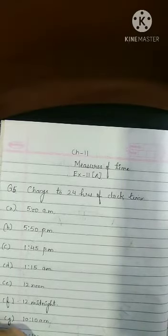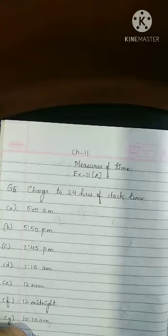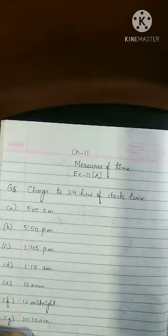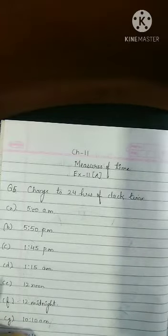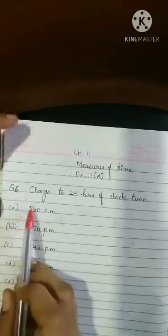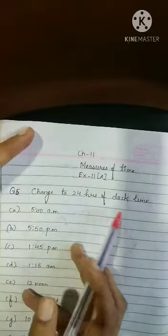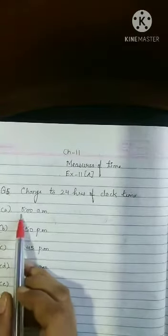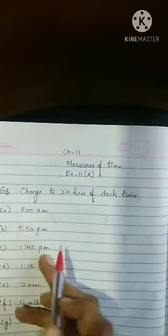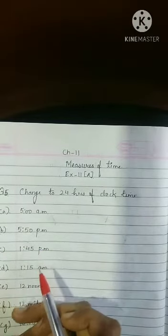Afternoon 12 o'clock, then after that when 1 pm comes we say 13, when 2 pm comes we say 14, when 3 pm comes we say 15. In this way we say 24 hours of clock. Now change to 24 hours of clock time. Now A1 is 5 am. So how do we change into 24 hours of clock?